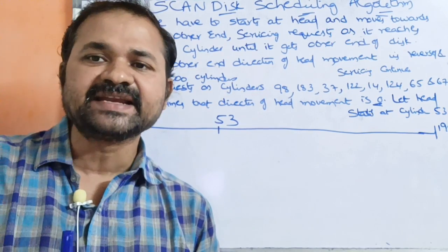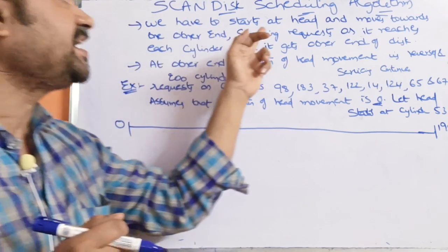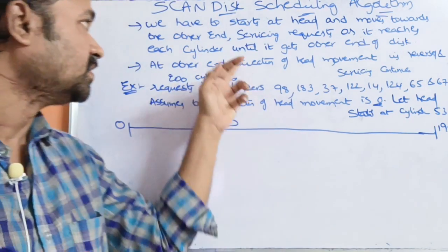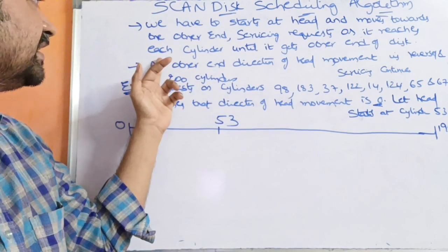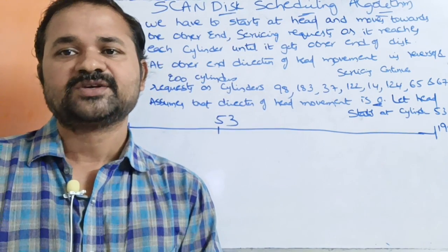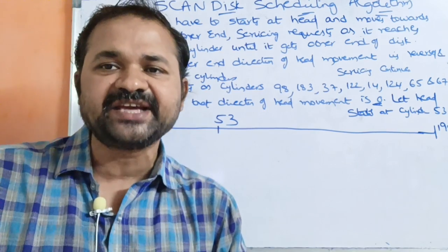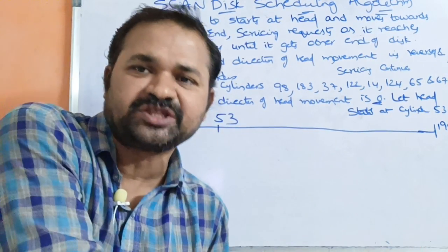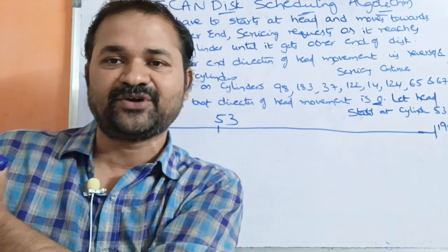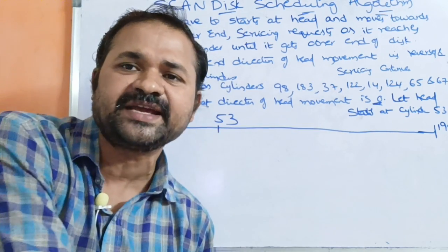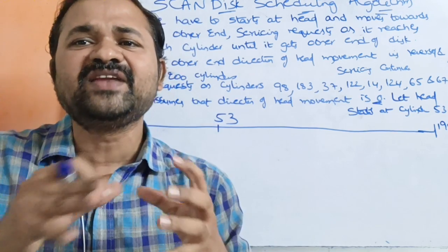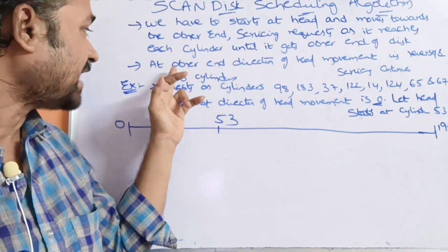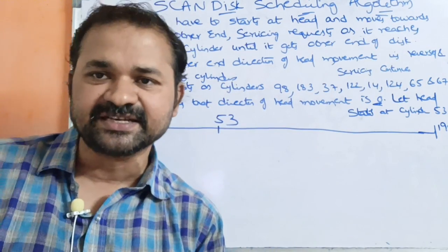Let us discuss the SCAN disk scheduling algorithm. The read/write head starts and moves towards one end, servicing requests as it reaches each cylinder, until it gets to the other end of the disk. While moving towards the start end or the last end, all requests encountered along the way will be serviced. Once the other end is reached, the direction of head movement is reversed.